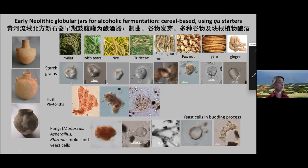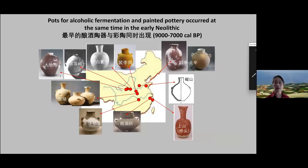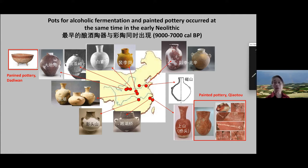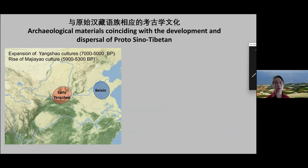These early pottery types were clearly associated with feasting. Alcohol was not just consumed at home but used to bring people together and share. When this special pottery type emerged, painted pottery also developed. Initially small with simple decoration, it gradually became more elaborate during the Yangshao cultural period.